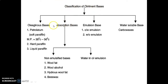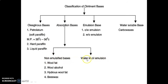Next, the classification of ointment bases — there are four main classes: oleaginous base, absorption base, emulsion base, and water-soluble base. In the oleaginous base, the first type is petroleum (soft paraffin) with a melting point of 38°C to 56°C, second is hard paraffin, and third is liquid paraffin. Absorption bases are classified into two types: non-emulsified bases and water-in-oil (W/O) emulsion, in which water is the internal phase and oil is the external phase. Non-emulsified bases include wool fat, wool alcohol, hydrous wool fat, and beeswax.